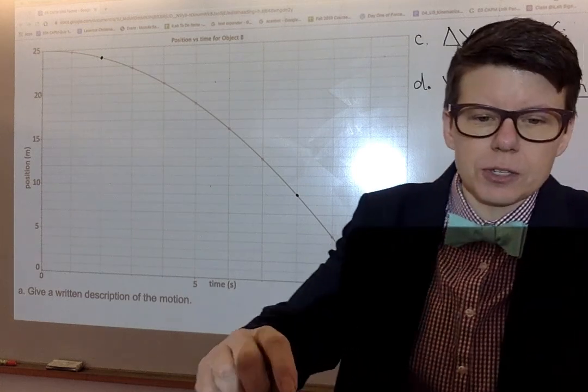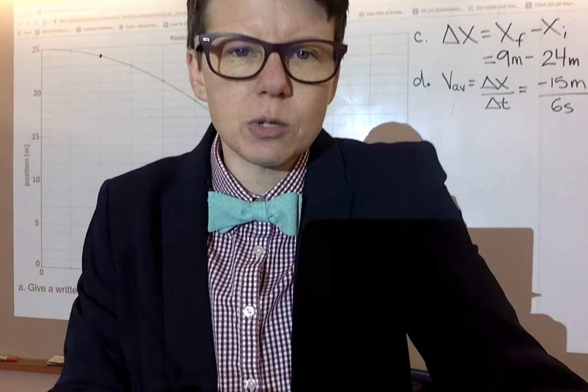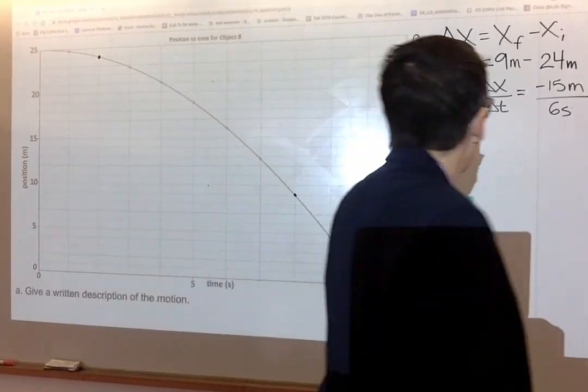Fifteen over six, and let me just open up a calculator on my computer. Fifteen over six, the decimal version of that is two and a half.